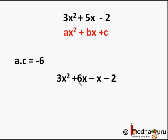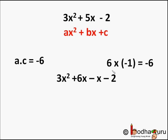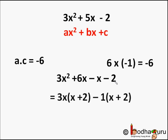Here, the product of extreme terms a × c = 3 × (-2) = -6. So we split the middle term coefficient 5 as +6 and -1, because +6 × (-1) = -6. So we will get 3x² + 6x - x - 2.